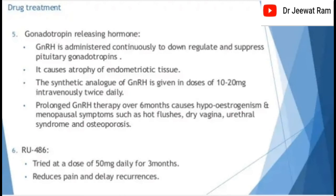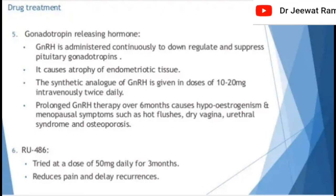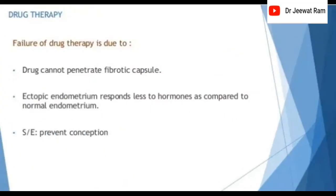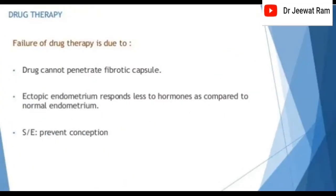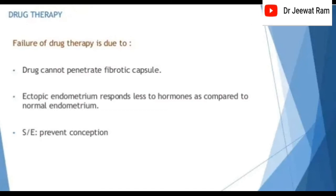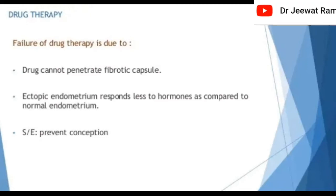RU-486 tried at a dose of 50 mg daily for 3 months reduces pain and delays recurrences. Failure of drug therapy is due to the drug's inability to penetrate the fibrotic capsule; ectopic endometrium responds less to hormones compared to normal endometrium, and side effects prevent continuation.